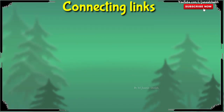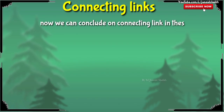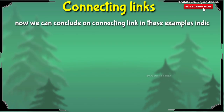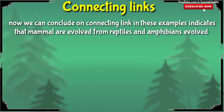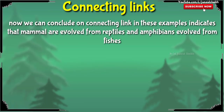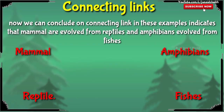Overall, from all these connecting link examples, we can conclude that mammals are evolved from reptiles and amphibians are evolved from fishes. In simple terms: mammals originated from reptiles, and amphibians originated from fishes.